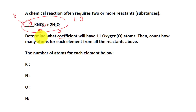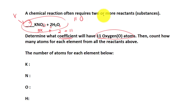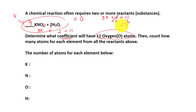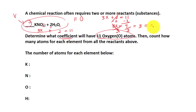When we combine the two reactants together, what do we need to have? 11 oxygen. So this plus this equals 11. That means 3x plus 2 equals 11. We subtract 2 from both sides — that cancels out, giving us 9 equals 3x. We divide both sides by 3, the 3 cancels out, and 9 divided by 3 gives us 3. So x equals 3.